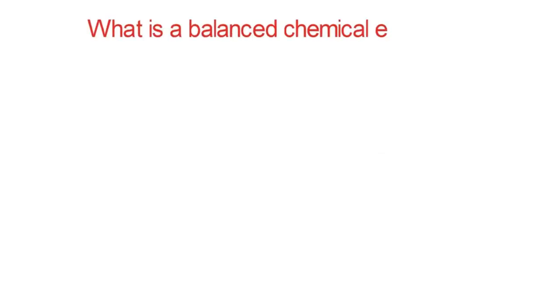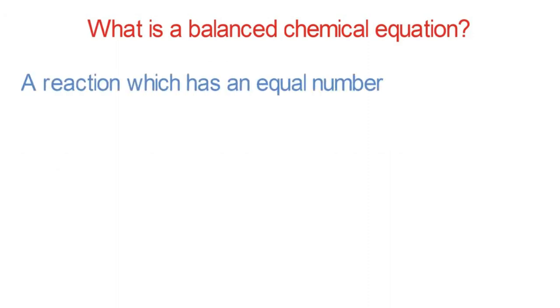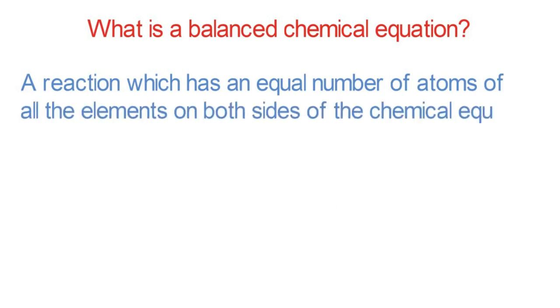What is a balanced chemical equation? A reaction which has an equal number of atoms of all the elements on both sides of the chemical equation is called a balanced chemical equation.